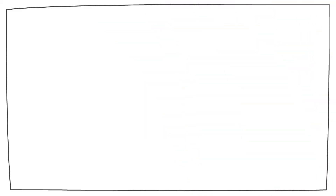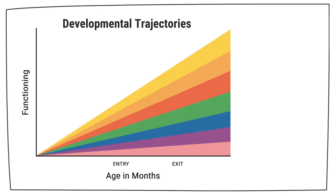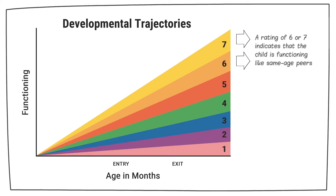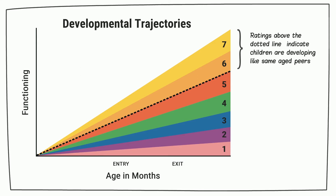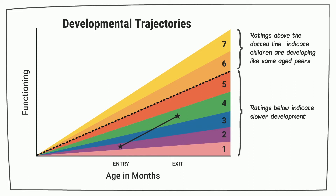Now let's talk about how the seven points on the child outcome summary rating scale become the A to E reporting categories. The seven points also represent developmental trajectories. A rating of 6 or 7 on the child outcome summary scale indicates the child is functioning like same-age peers — that is, following the trajectory for typical development. In the graph, the dotted line indicates typical development. Ratings above the dotted line indicate children are developing like same-age peers; ratings below indicate slower development. For example, a child rated 2 at entry and 4 at exit — drawing a line connecting those two ratings shows the child's developmental trajectory during the program.